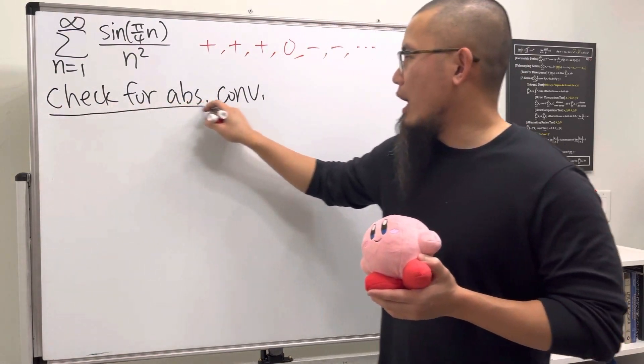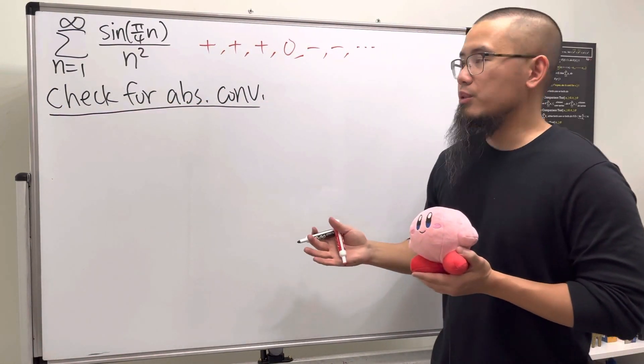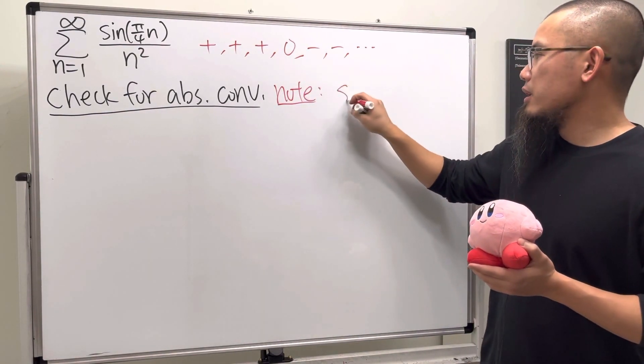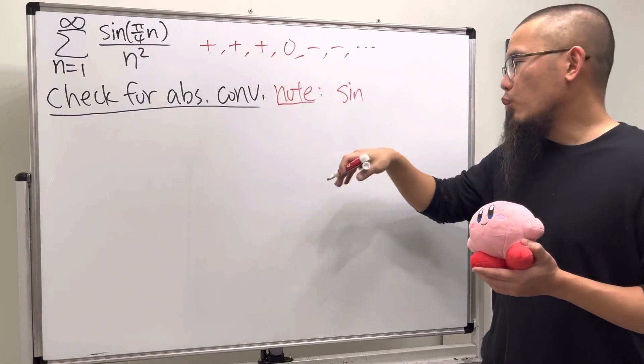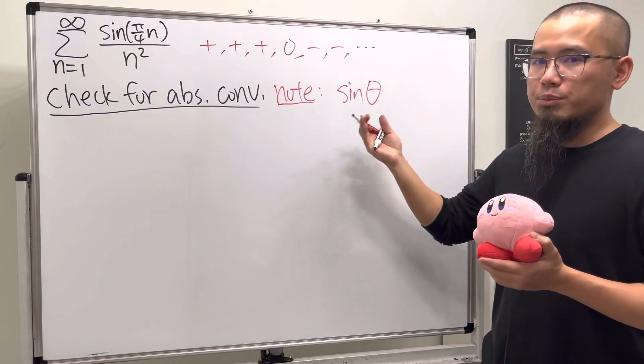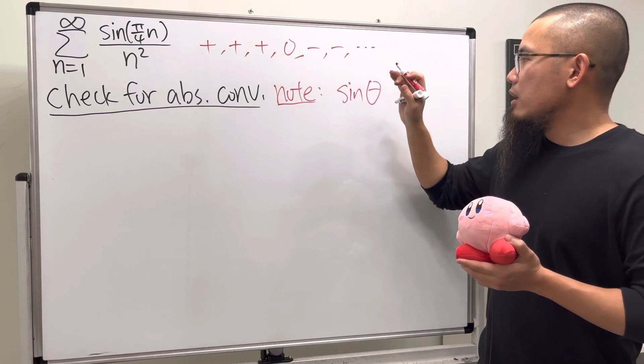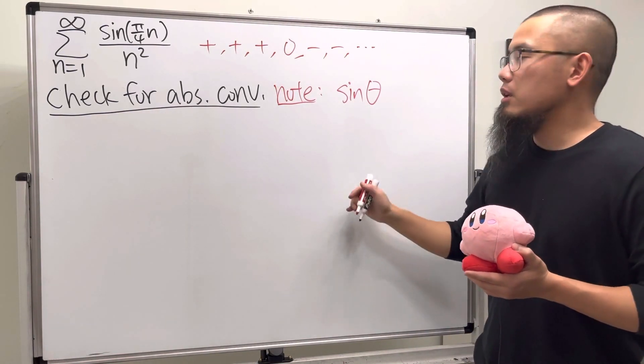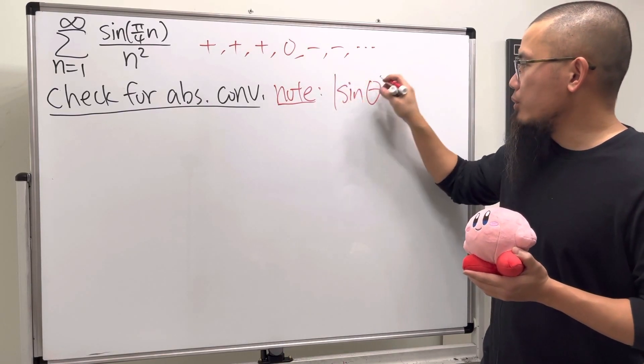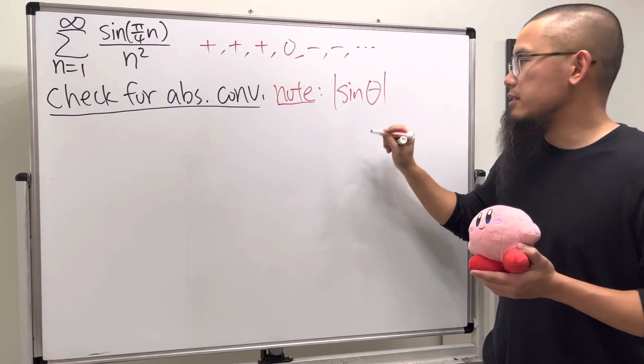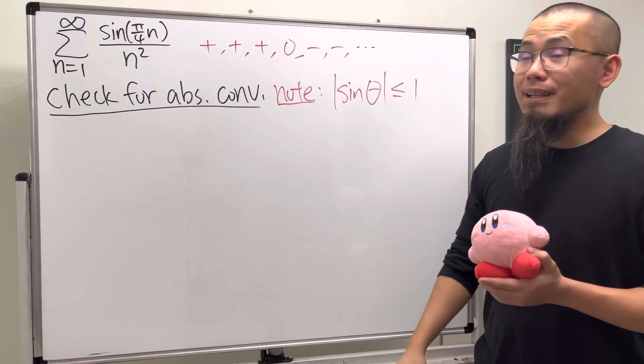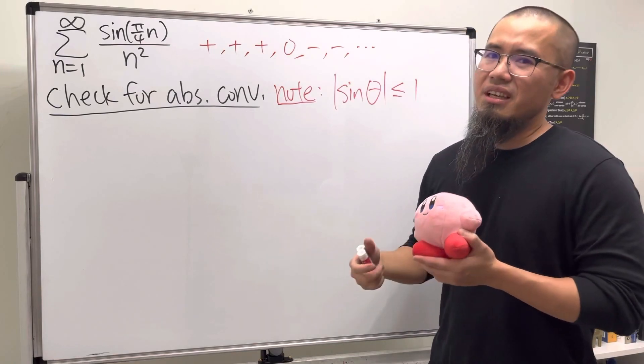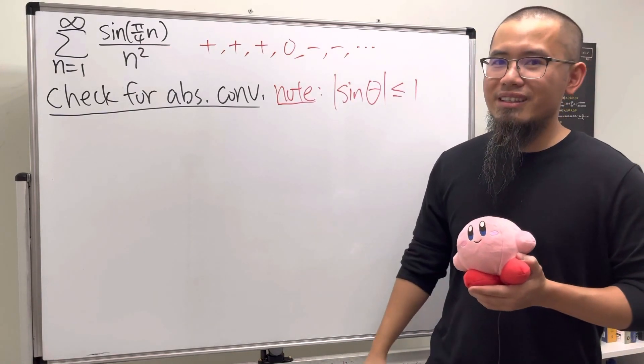The main reason why this is so much better: whenever we have sine or cosine, the value of sine of θ is between negative one and one inclusively. So the absolute value of sine θ is always less than or equal to 1. If we apply the absolute value, we can use this inequality and then use the comparison test.